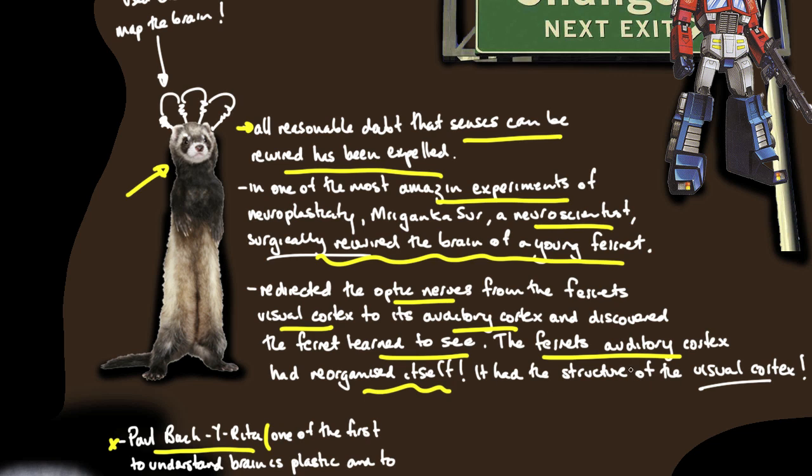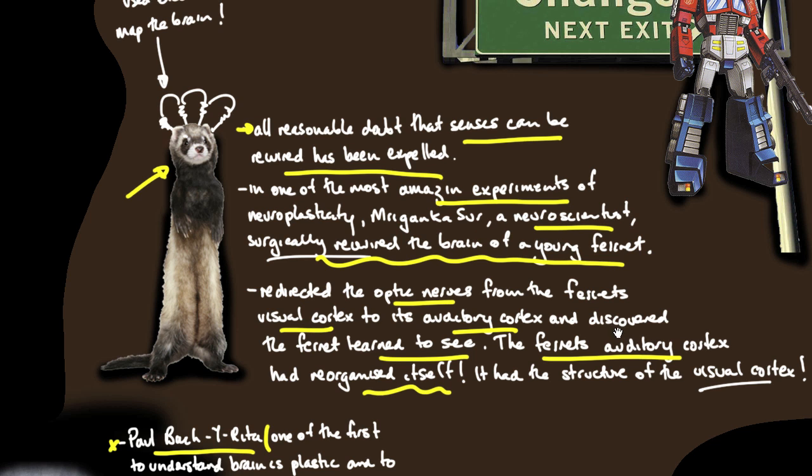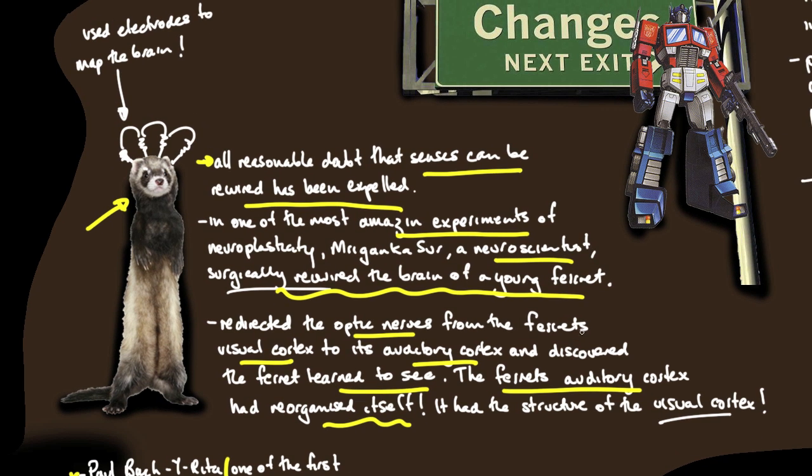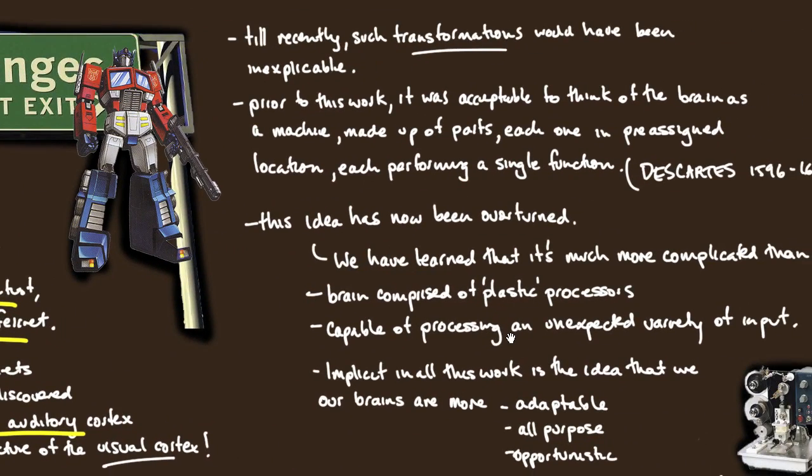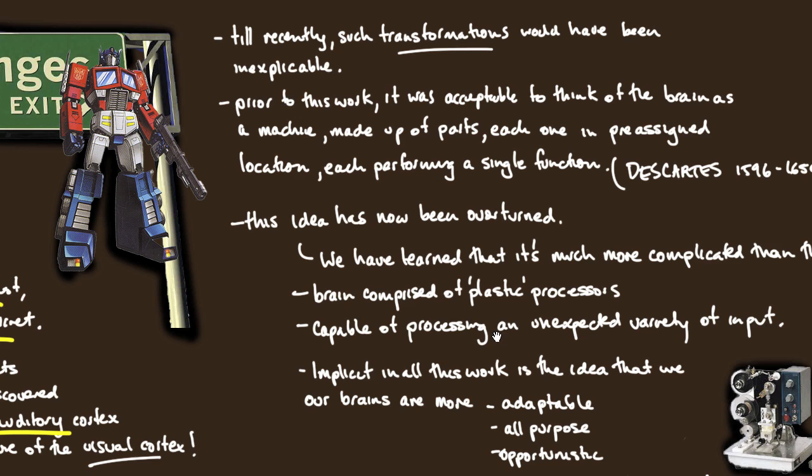Incredible as it seems, the brain wanted to see and it found a way to do it. The ferret didn't have 20-20 vision, but sufficient enough to find an acorn.